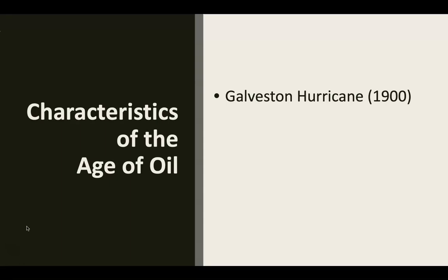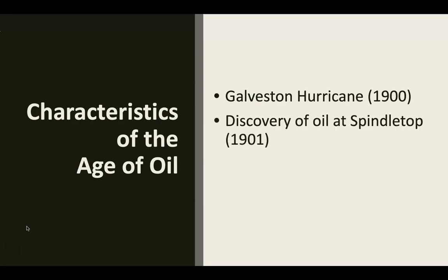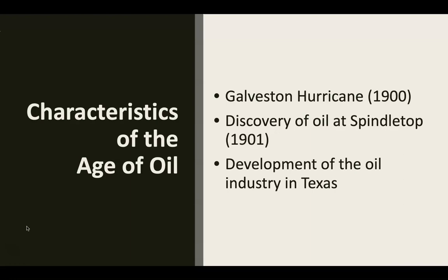In 1900, shortly before the discovery of oil at Spindletop, the Galveston hurricane came in and destroyed the city of Galveston. When oil was discovered in early 1901, this led to a huge change and caused the city of Houston — not too far from Beaumont — to have this huge boom and grow. As a result, when shipping and trade companies were looking for a place to relocate, Houston was the logical choice. That's why today Houston is an incredibly large, populated city with an unbelievable economy, and Galveston is just a tourist spot. Another characteristic of the age of oil is the discovery of oil at Spindletop in 1901, and the development of the oil industry in Texas.